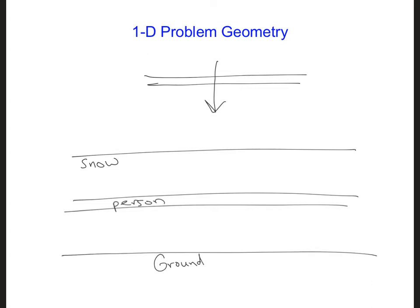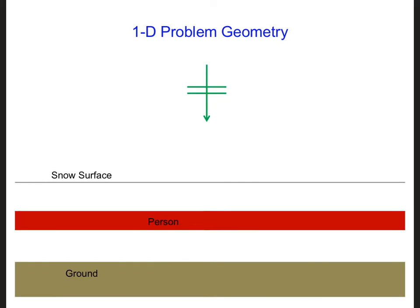By initially reducing the problem to one dimension, now we only need to solve Maxwell's equations in one dimension. Let's assume that the downward direction here is the x direction. This means that the electric and magnetic fields can only change in the x direction. So now let's look at what this geometry simplification does to simplify the two equations we want to solve, Ampere's and Faraday's laws.